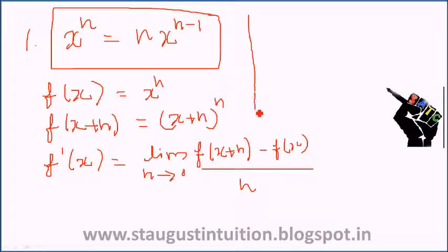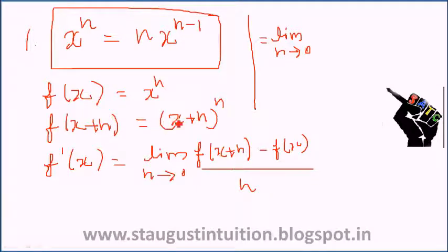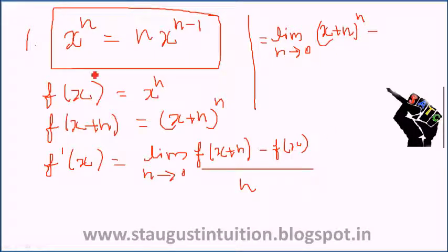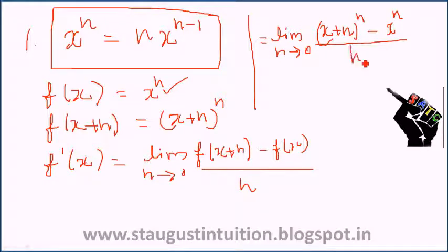According to this formula, the derivative equals limit h tends to 0 of (x + h) raised to n, minus x raised to n, all divided by h.